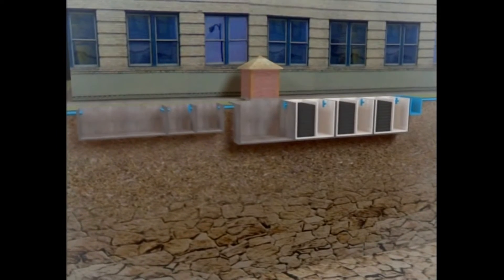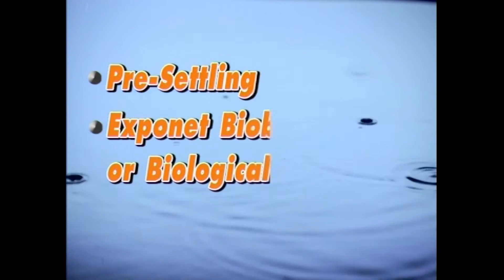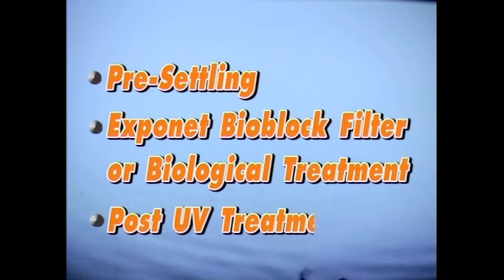The important procedures of the working system are as follows: 1. Pre-settling. 2. Exponent Bioblock Filter or Biological Treatment. 3. Post-UV Treatment. Each step has the following details.